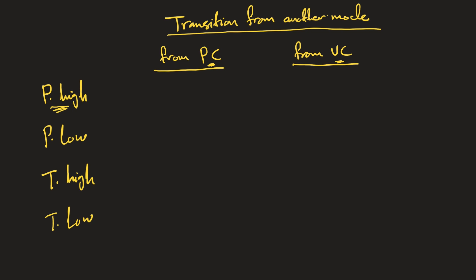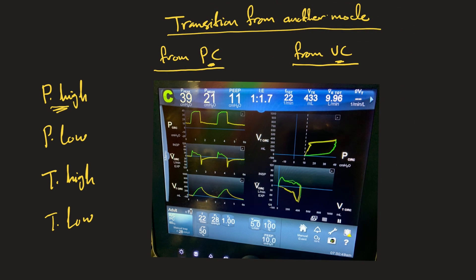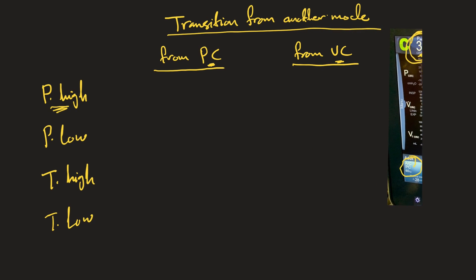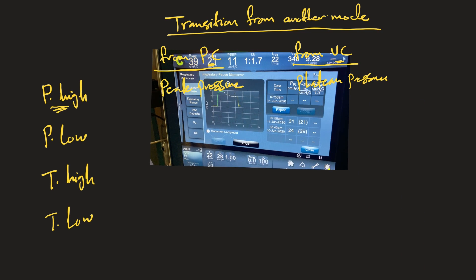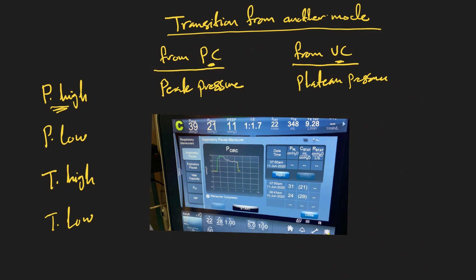For transitioning from pressure control, simply look at the peak pressure of the patient before transition. For example, if the peak pressure is 39 cmH2O, that becomes your P-high once you transition to TCAV. So in pressure control, P-high equals the peak pressure.